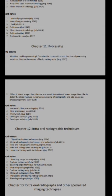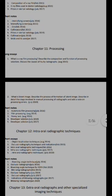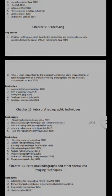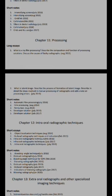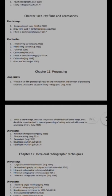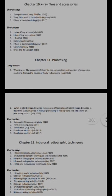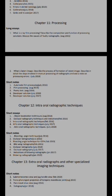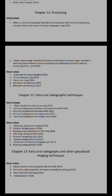For the grid, write about its types, function, and modifications to parameters like exposure time and kVp when using a grid. For collimators, write about the various types, which is commonly used, and which is the best collimator. These accessories — filters, grids, and collimators — have already been discussed in context.